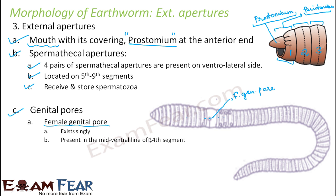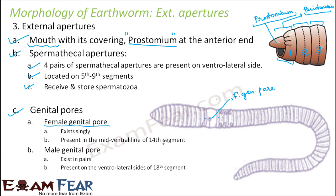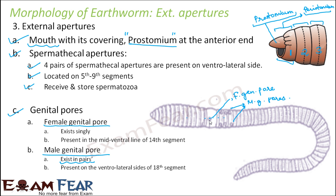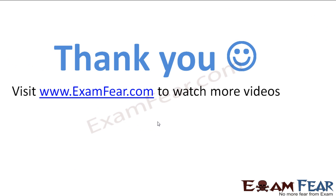The male genital pores exist in pairs — this is one important difference from the female genital pore. The male genital pores are present on the ventrolateral sides of the eighteenth segment, so they are located slightly sideways, whereas the female genital pore is located along the mid-ventral line. These are the external apertures present on the body of the earthworm.